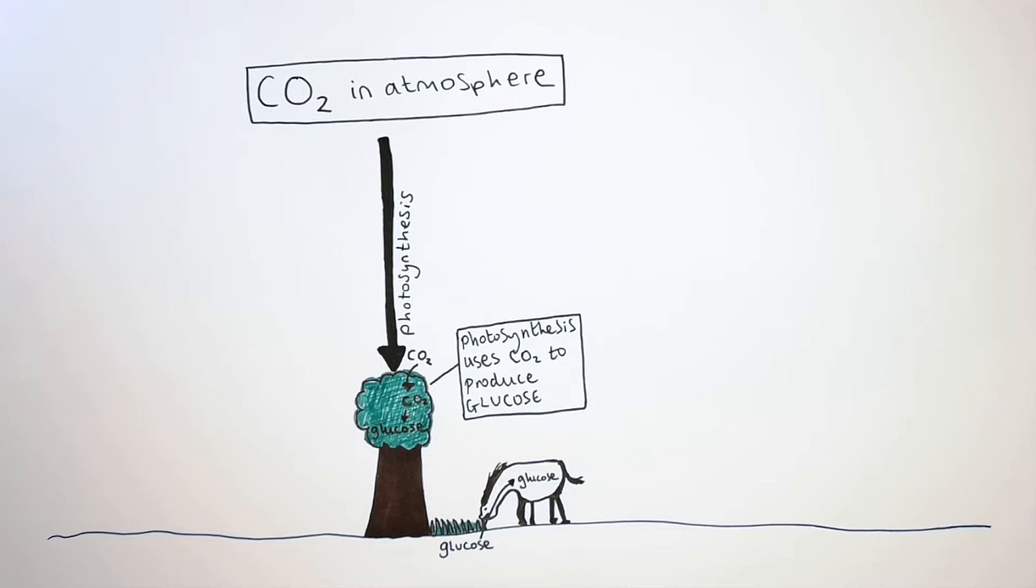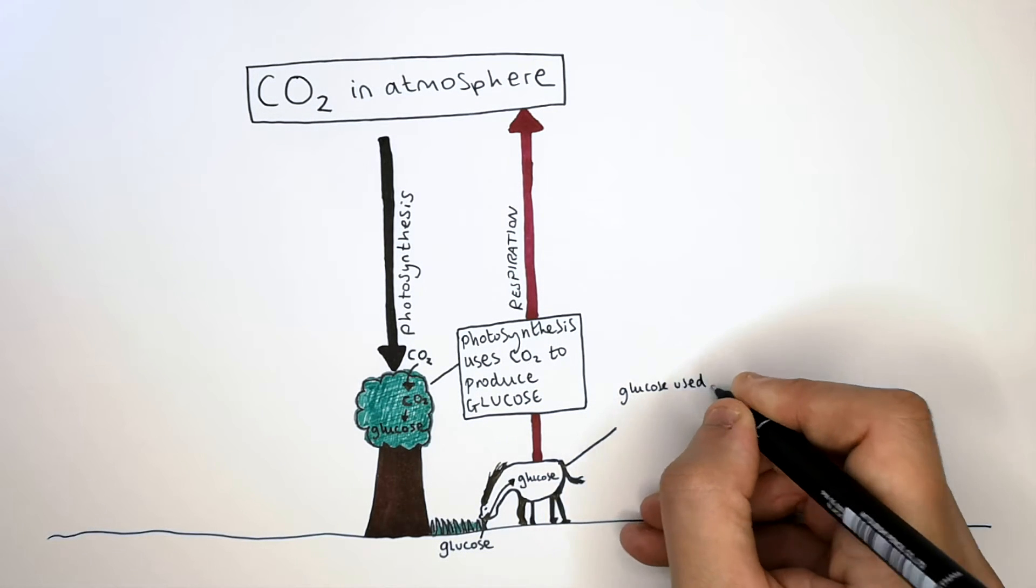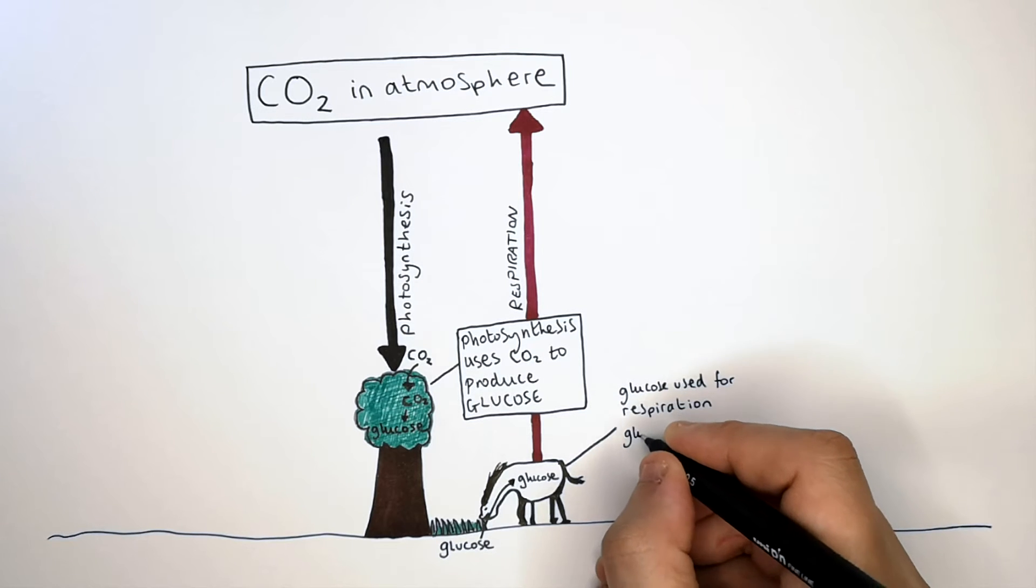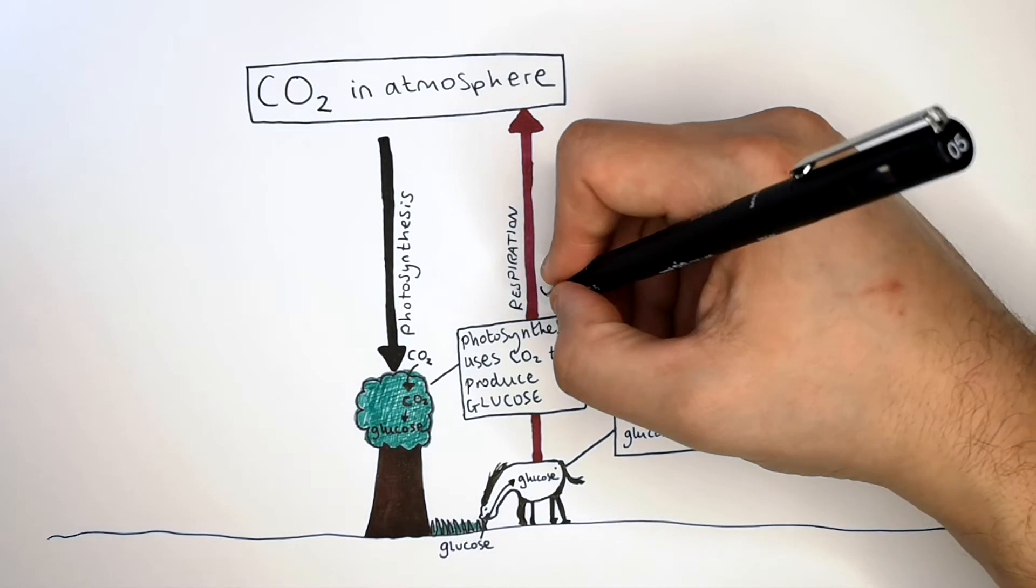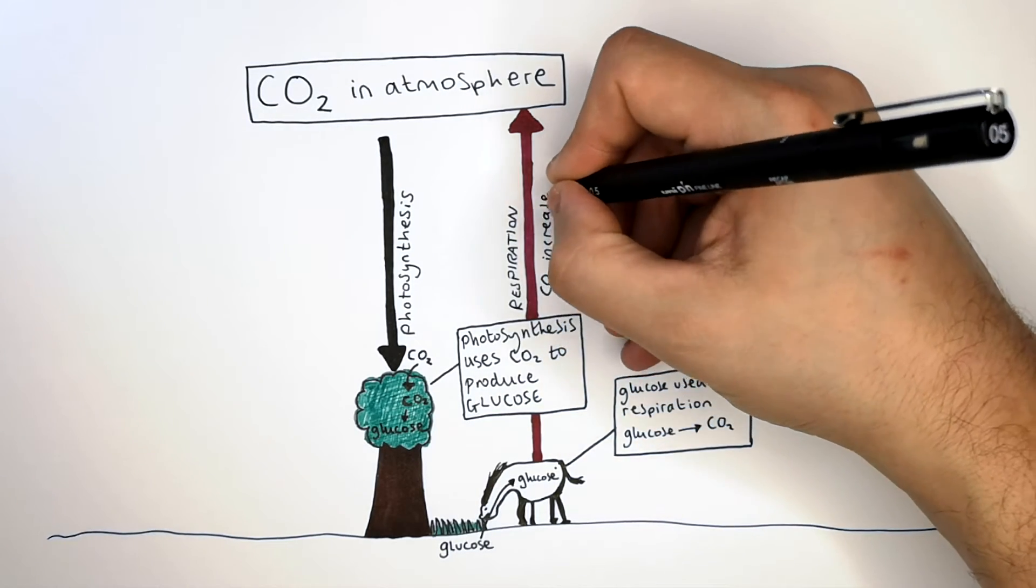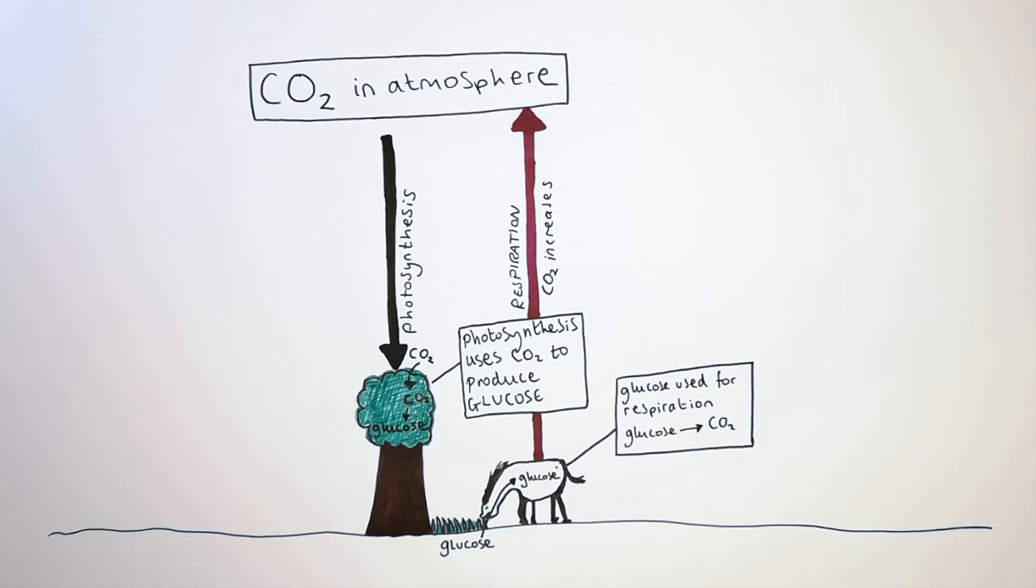The organism is then going to use that glucose for respiration, which happens in the mitochondria of cells. Glucose is used for respiration, where the glucose is then converted back into CO2. The animal or organism is going to release the CO2 back into the atmosphere. So respiration increases CO2 in the atmosphere.